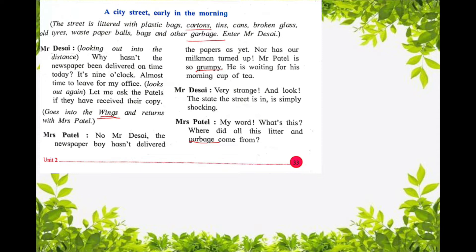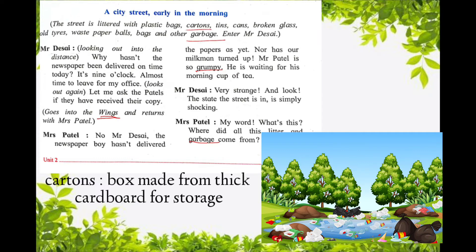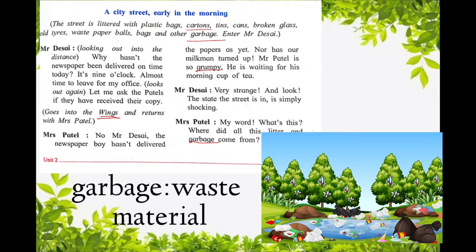The street is littered with plastic bags, cartons, tins, cans, broken glass, old tires, waste paper balls, bags and other garbage. The meaning of cartons is a box made from thick cardboard for storing goods — it is one kind of garbage. Garbage means waste material or unwanted things that you throw away.